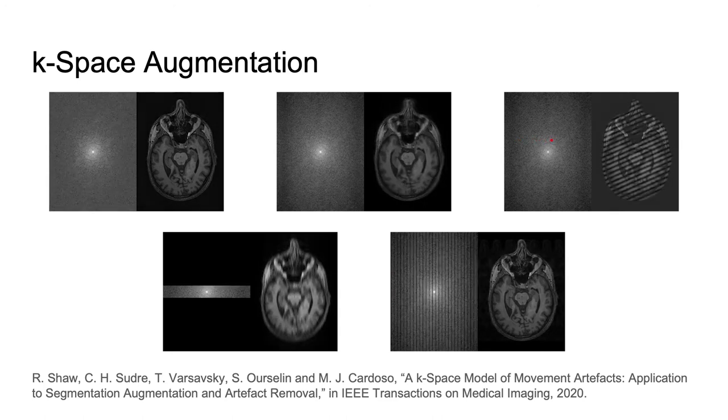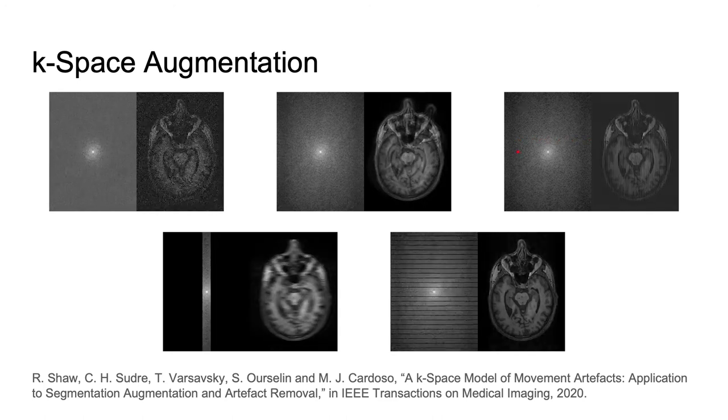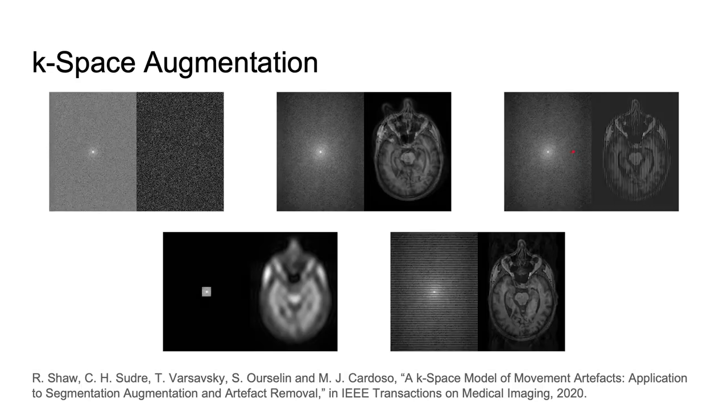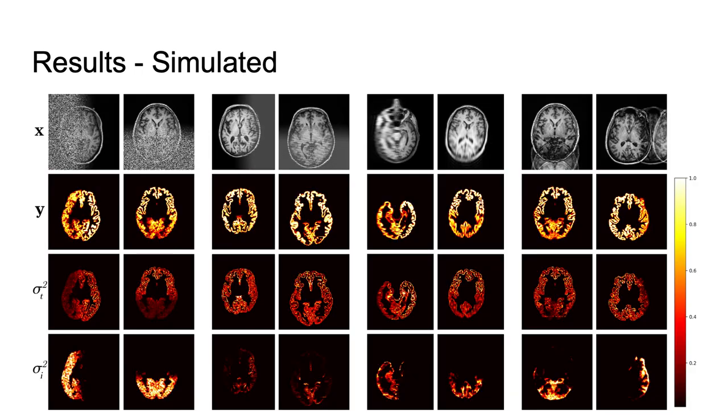We use simulated case-based augmentations including Rician noise, blurring, wraparound and motion artifacts to train our models. We present results on simulated data with spatially varying artifacts and show that our model is able to highlight artefacted regions.